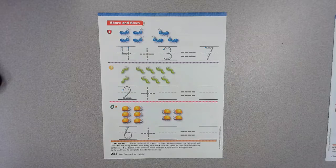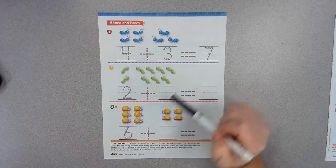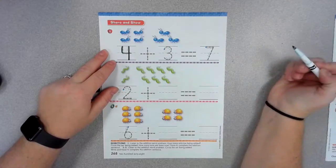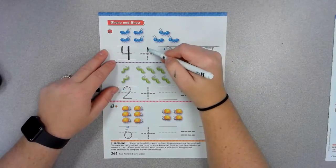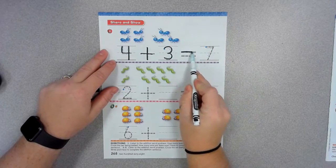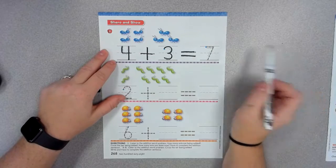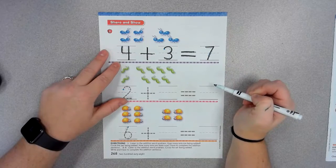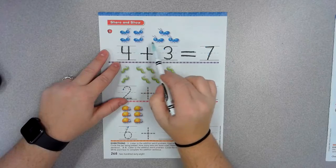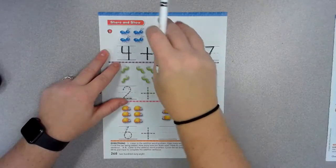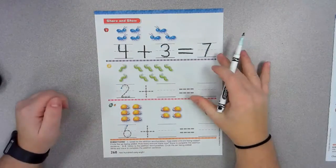How many ants are being added? This one shows us the numbers for you to trace. We have four in the first group, three are being added, and after we add them the number we get is seven. So four plus three — if you have four and you have three and you put them together, it is equal to seven.